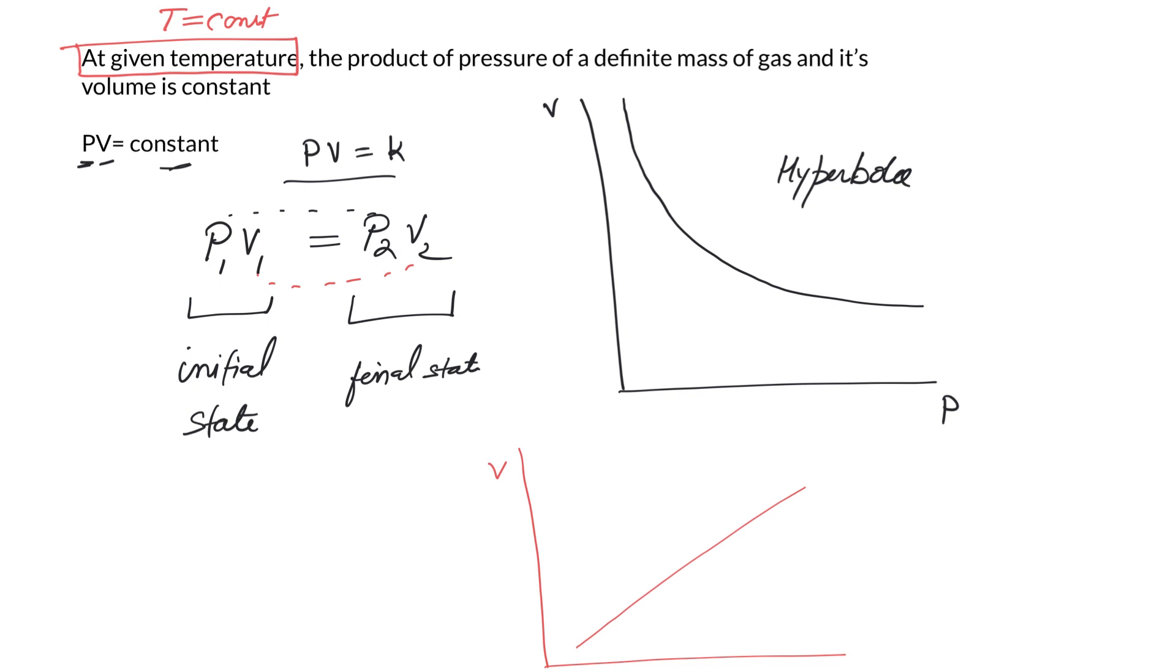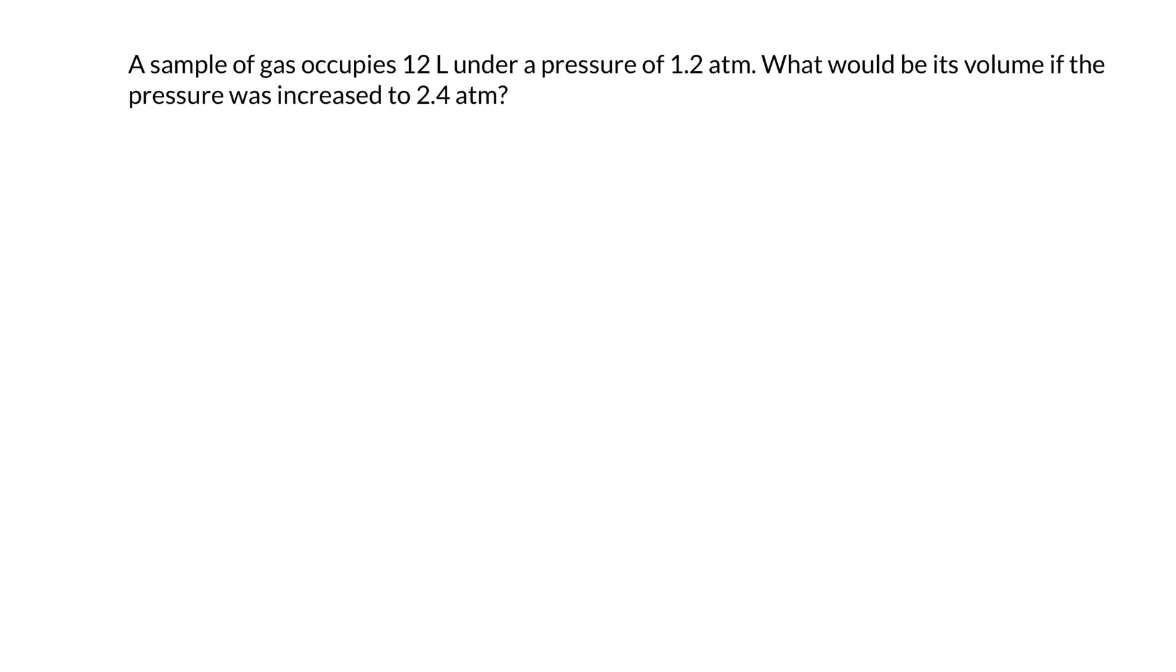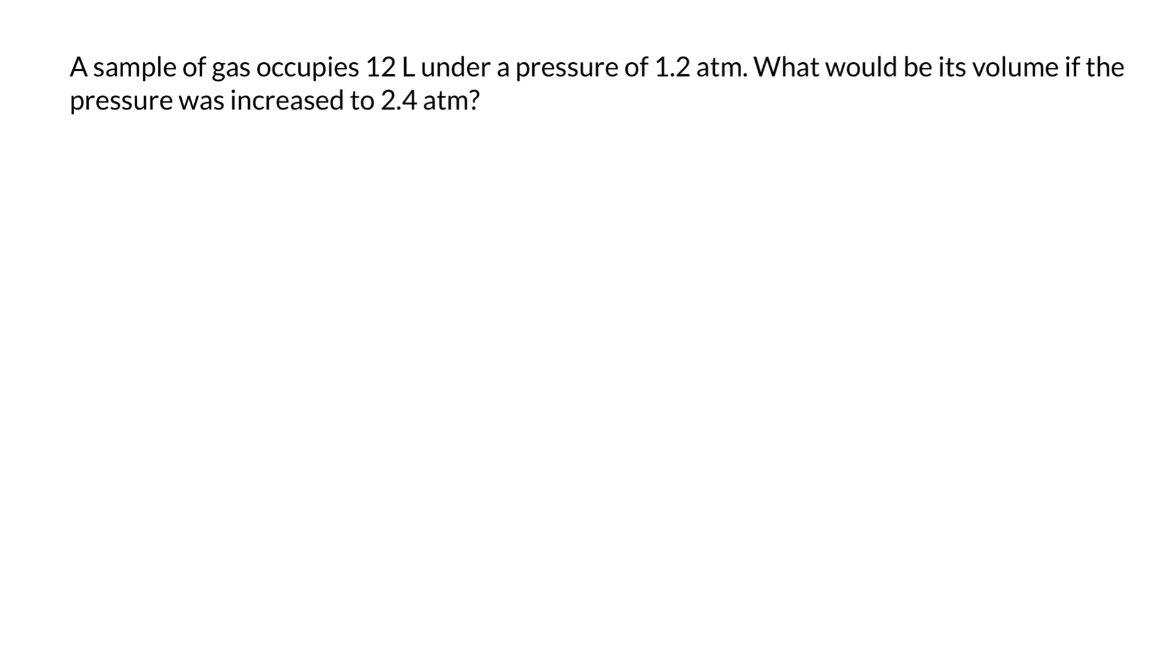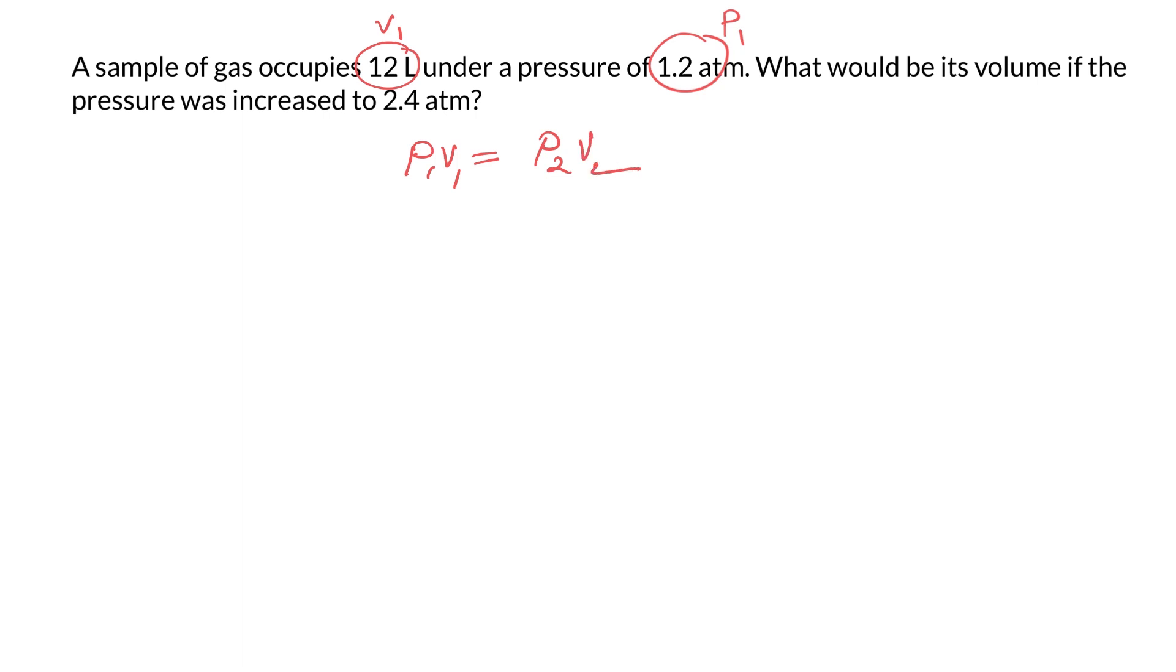Let's try to solve a problem. A sample of gas occupies 12 liters under pressure. The moment you have a question, try to look for the variables. So V1 is 12 liters, P1 is 1.2 atm. P1V1 is equal to P2V2. The pressure was increased to 2.4. What would be the volume?